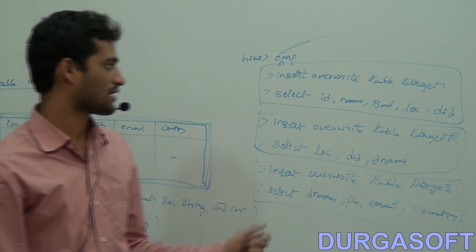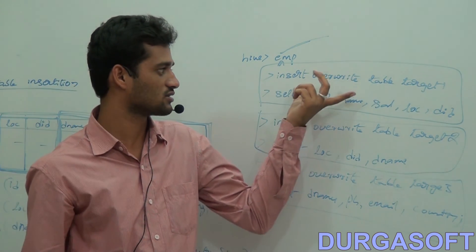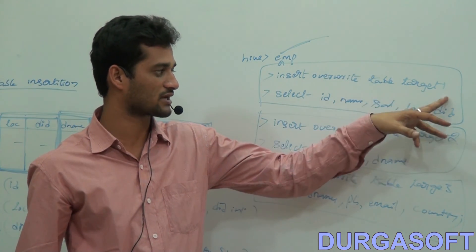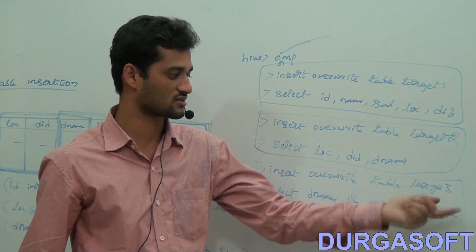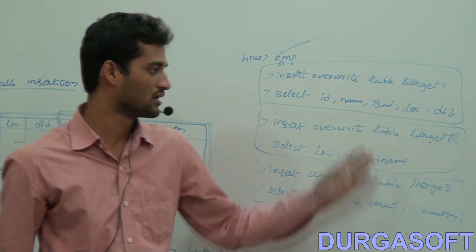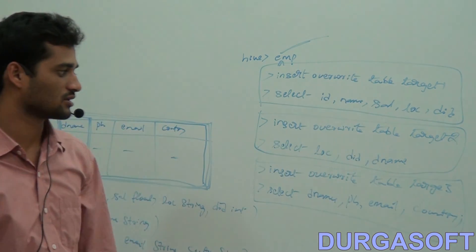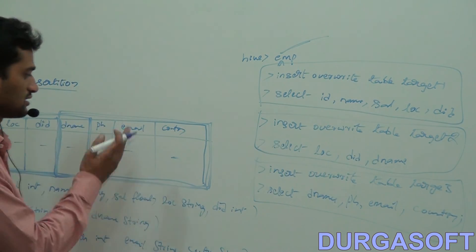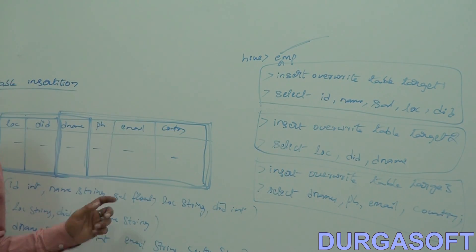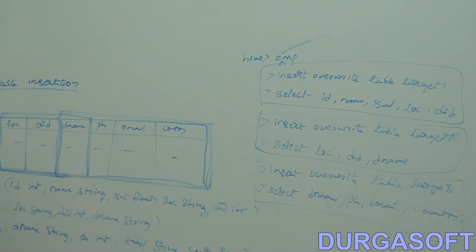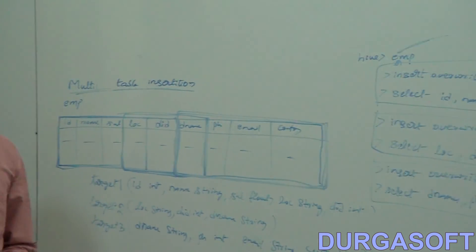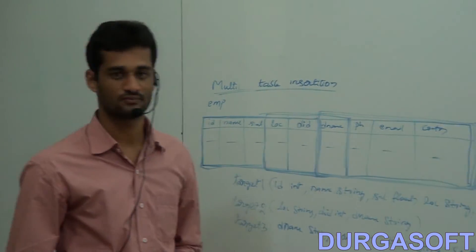If you have any doubt, run SELECT * FROM target_one, SELECT * FROM target_two, SELECT * FROM target_three — these tables will automatically show data from the EMP table. This is what multi-table insertion. Thank you.